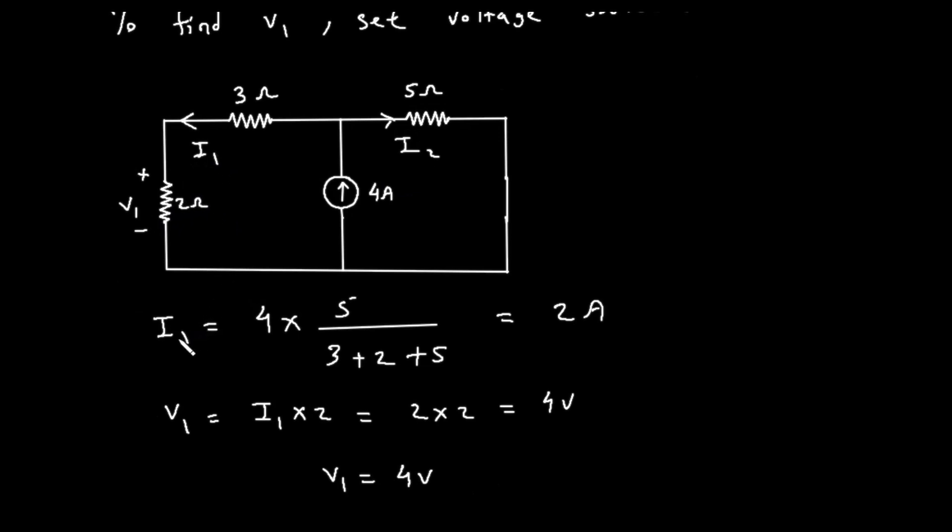The formula shown is I1 equals 4 times the fraction, with 5 in the numerator, and 3 plus 2 plus 5 in the denominator. Let's calculate this. The denominator is 3 plus 2 plus 5, which equals 10. So, I1 equals 4 times 5 divided by 10. This simplifies to 20 divided by 10, which gives us 2 amperes. So, I1 is 2 amperes.